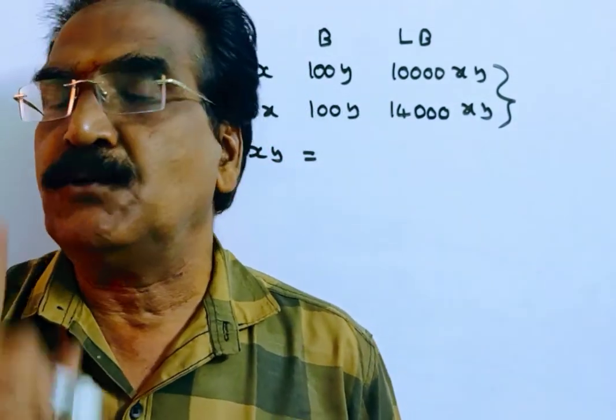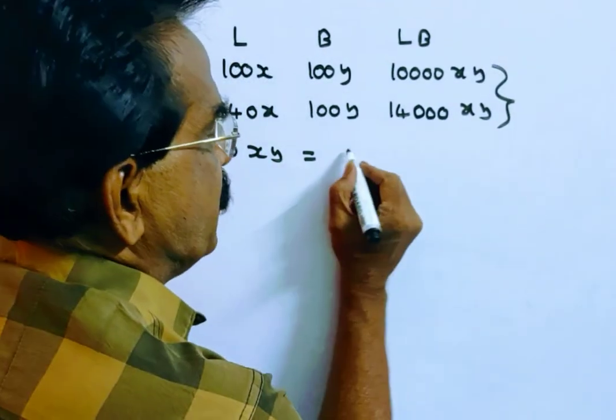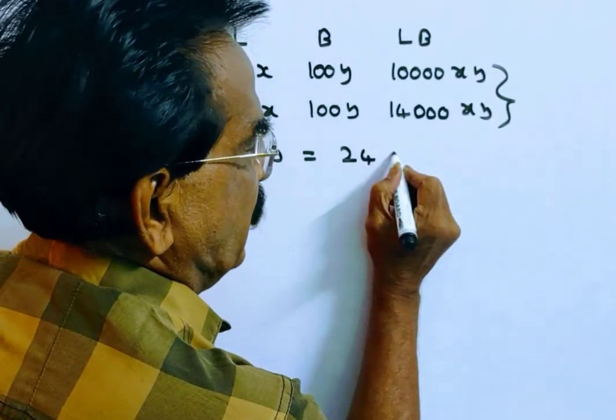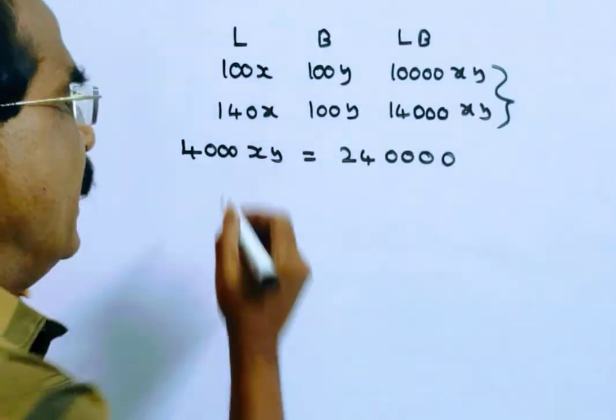1 square meter is equal to 10,000 square centimeters. So 24 square meters is equal to 24 into 10,000, that is 2,40,000 square centimeters.